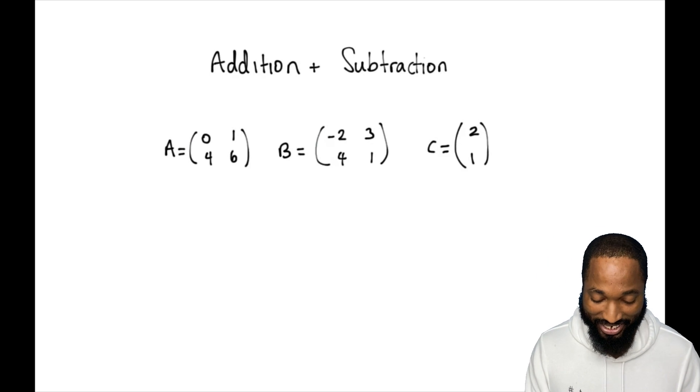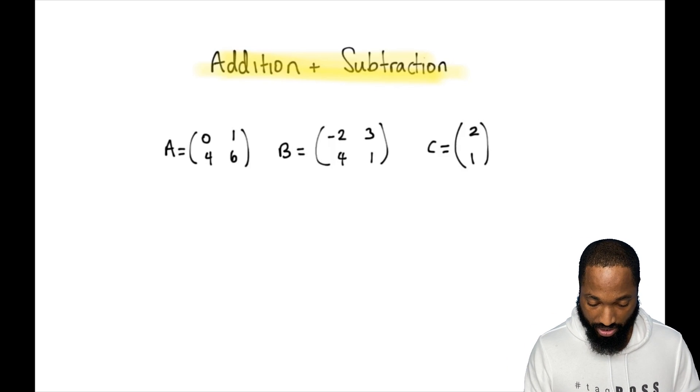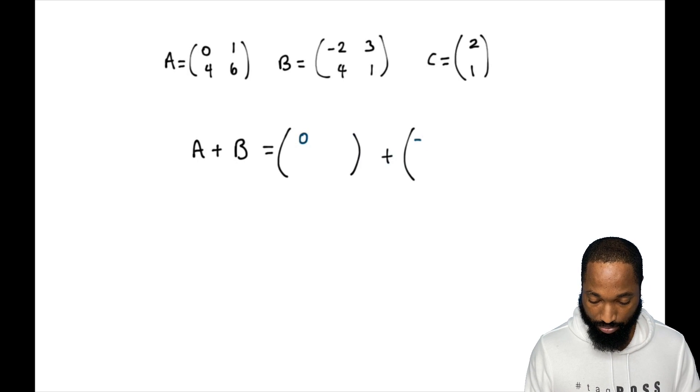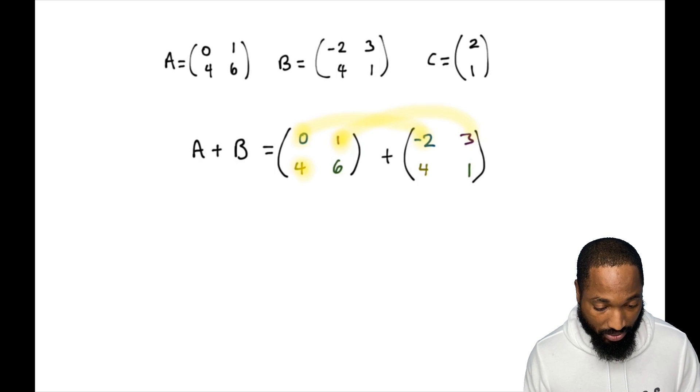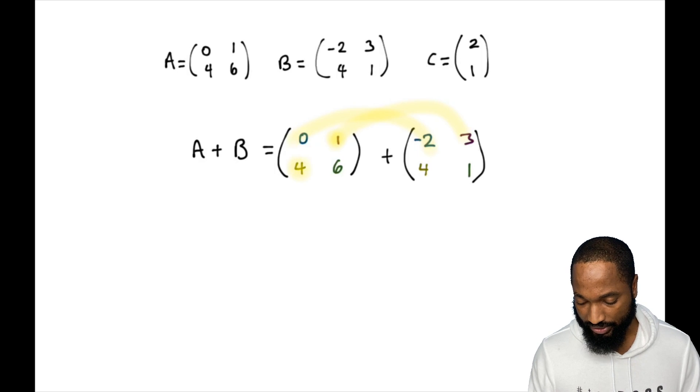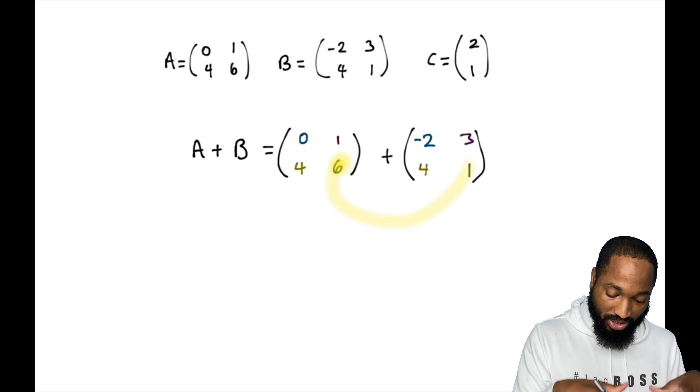Addition and subtraction of matrices - we're coming into some higher level things. How does this work? A is this, B is this: negative two, three, four, one, two, one. We just named up some matrices here - A, B, C, nice to meet you. If we need to add A and B together, how do we do it? Well, we line it up. You'll notice I'll put little corresponding colors and things here. Zero and negative two - that's what we're doing here. You're just adding respective elements.